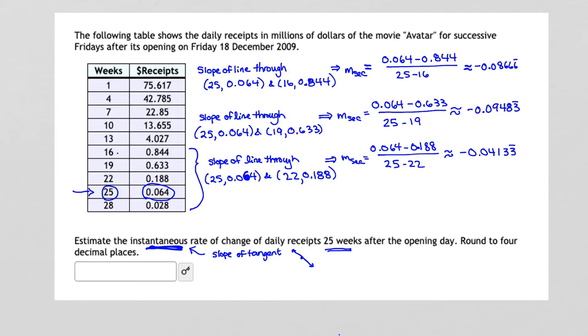And finally, let's look at weeks 28 and 25. When we calculate the slope of the line through those two points, those two data points, we get negative 0.012. But what's a little disturbing here is there is no real pattern that's developing. There doesn't seem to be any kind of number that these slopes are leaning towards. There doesn't seem to be any particular pattern or any kind of limit going on.